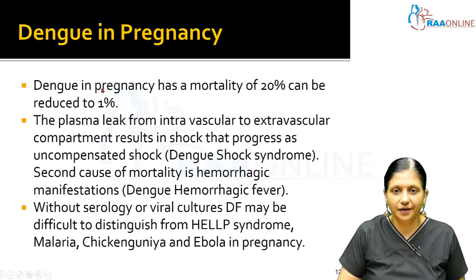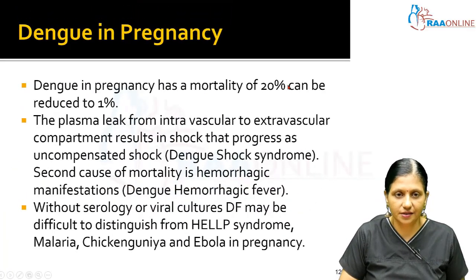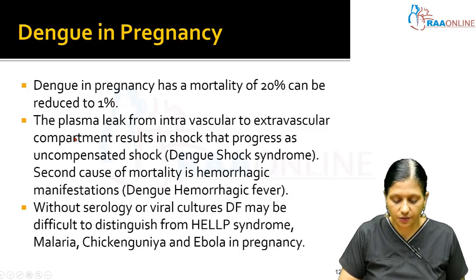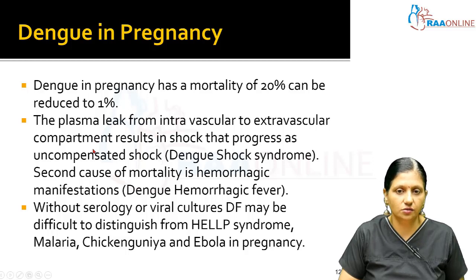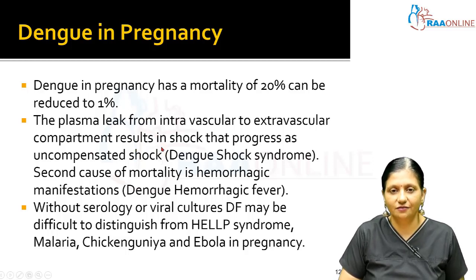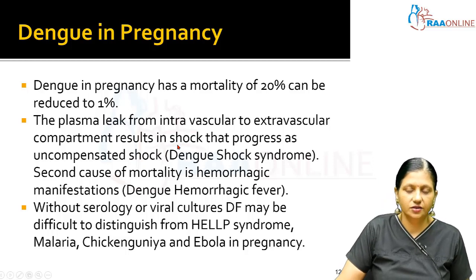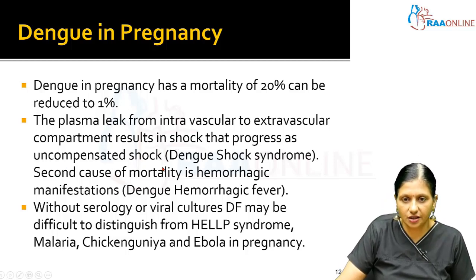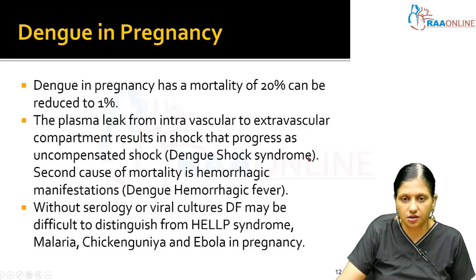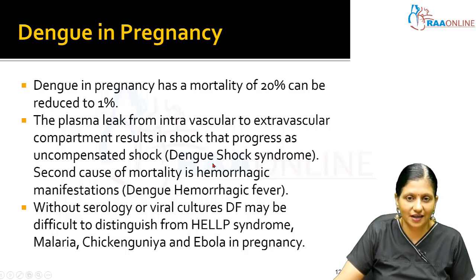Dengue in pregnancy has a mortality of 20%, which can be reduced to 1%. The basic mortality is due to plasma leak from the intravascular to the extravascular compartment, causing shrinkage of the intravascular compartment and shock. This progresses as uncompensated shock, which is called Dengue shock syndrome.